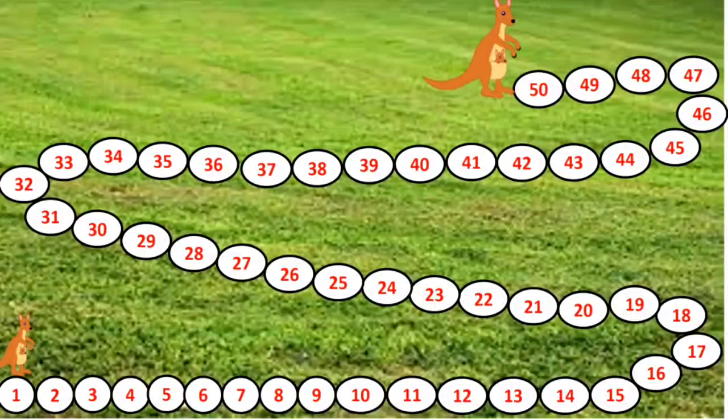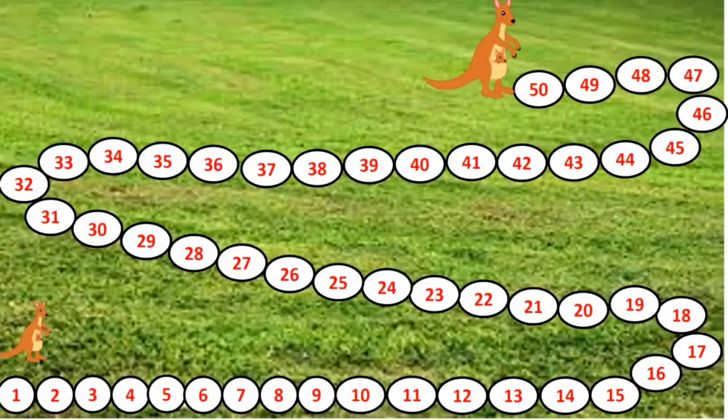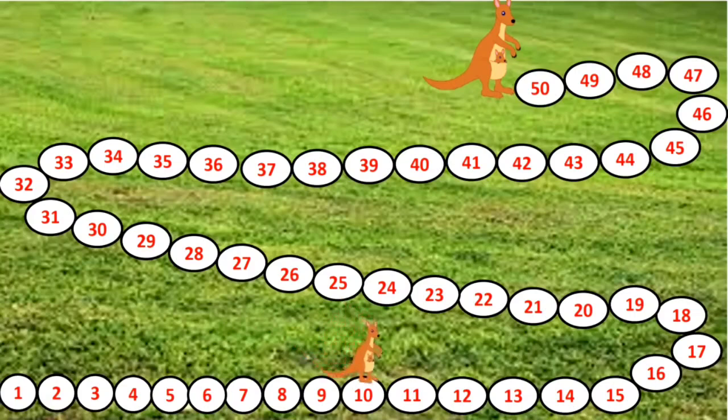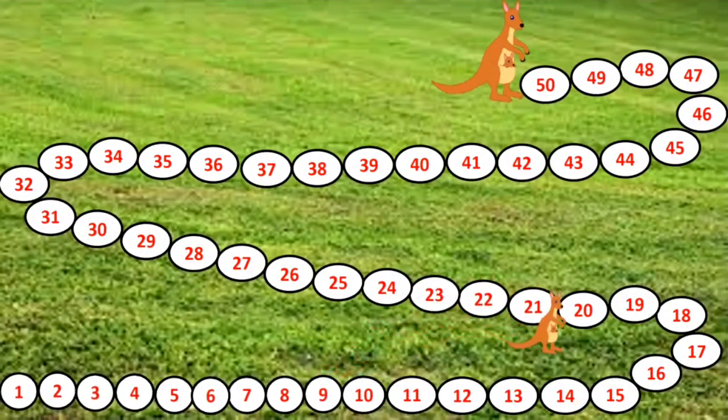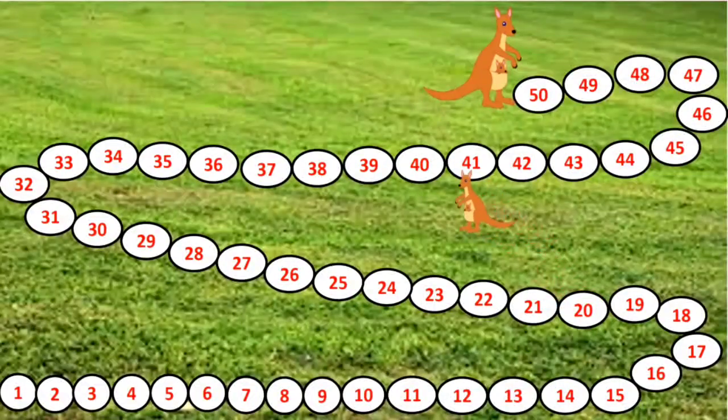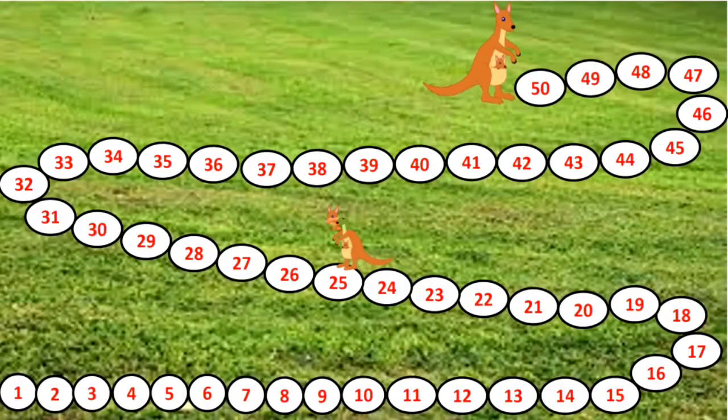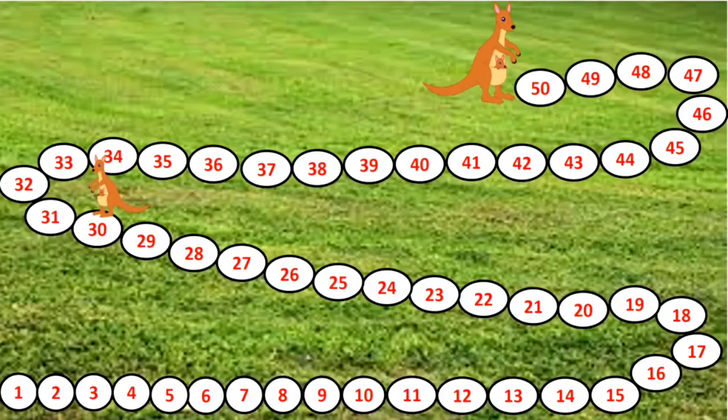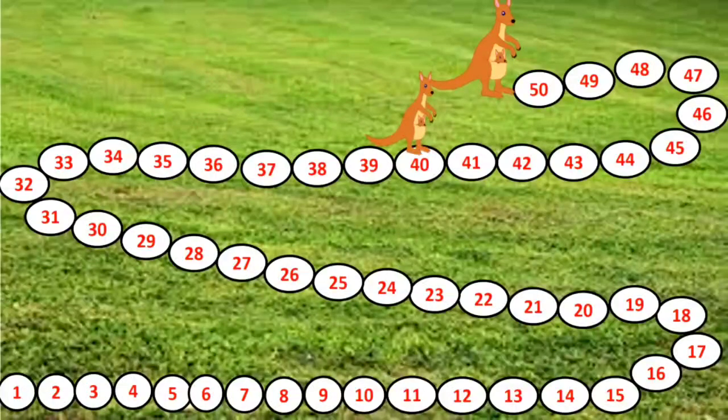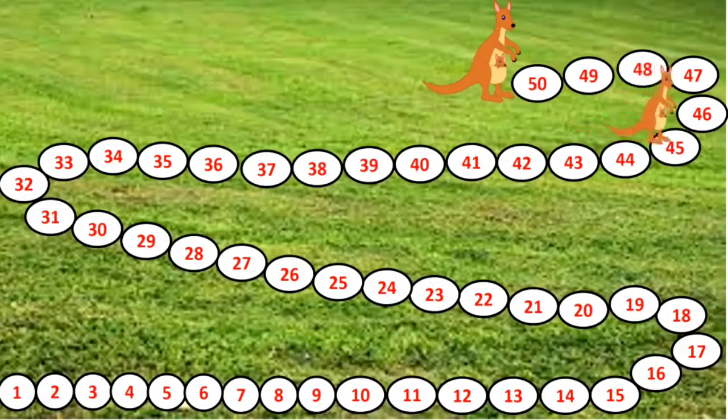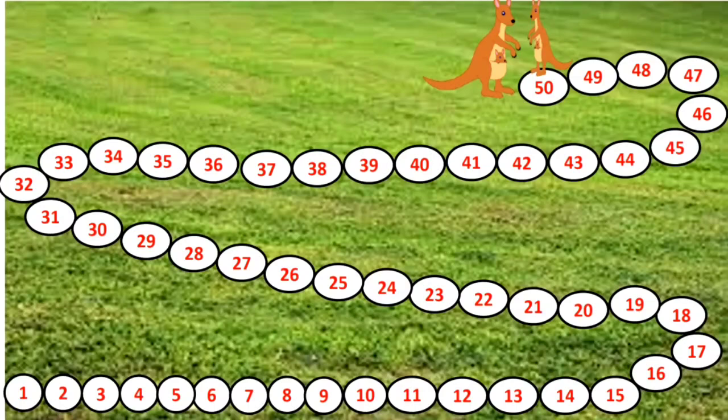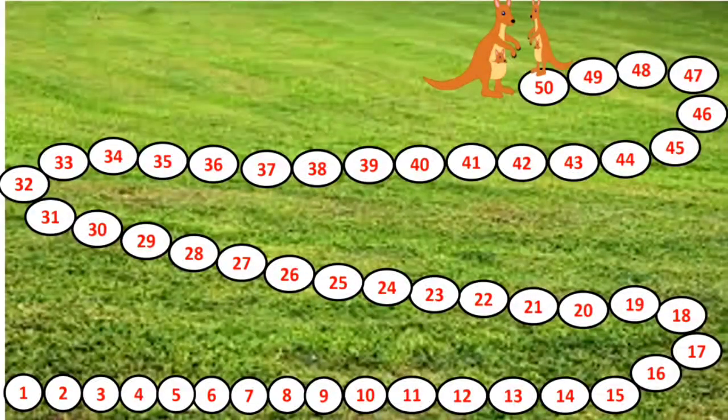Now the kangaroo is standing at 1. So next. 5. Children please repeat after me. 5, 10, 15, 20, 25, 30, 35, 40, 45, 50. And now the two kangaroos meet each other.